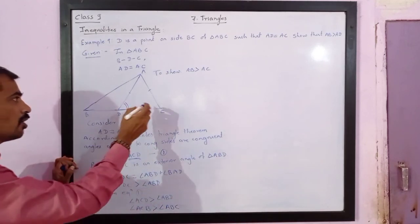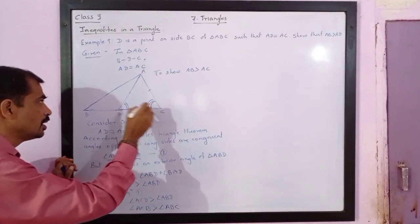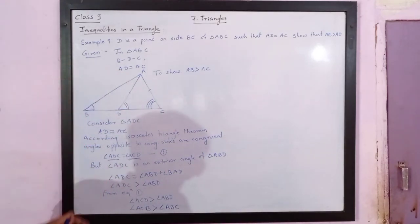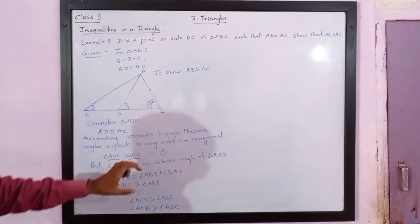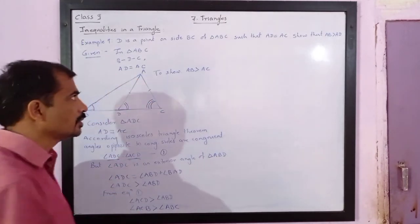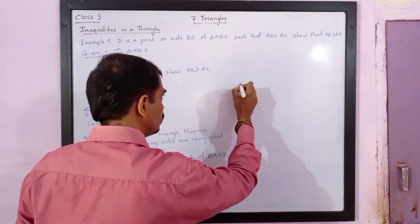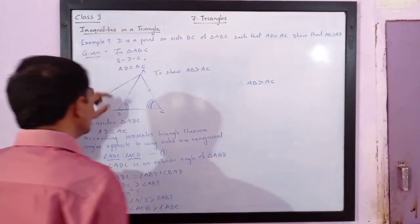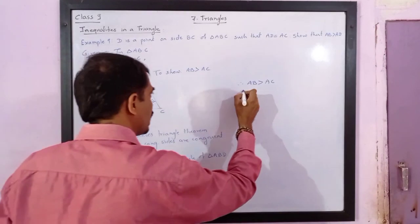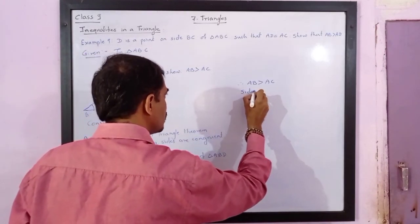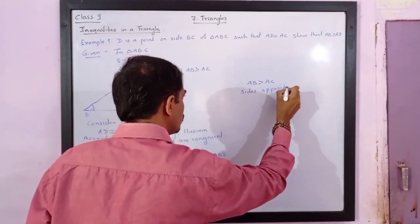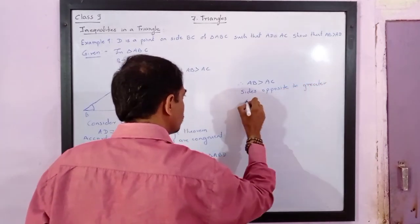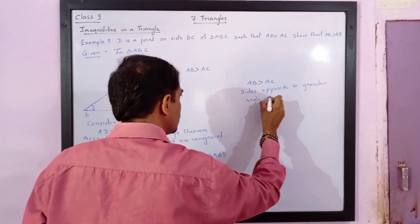Since angle ACB is greater than angle ABC, the side opposite to the greater angle is greater. Side opposite to angle ACB is AB, and side opposite to angle ABC is AC. Therefore AB is greater than AC. The reason is: side opposite to greater angle is greater.